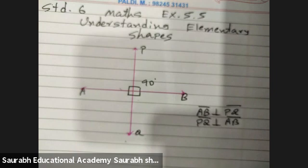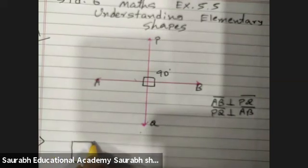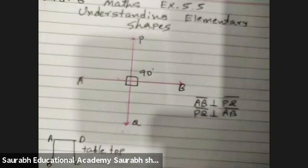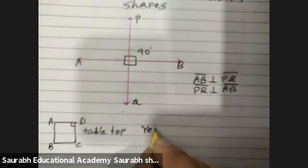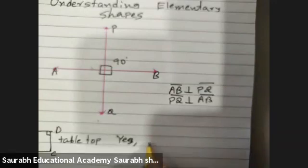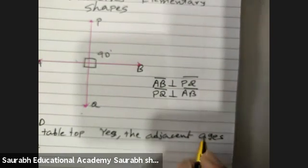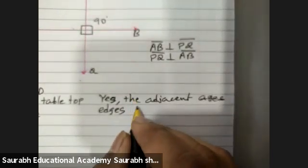You are given adjacent edges of a table top. Now see, here is your table top. So these edges are perpendicular to each other because they are at 90 degrees. Yes, we can write yes, the adjacent edges of a table top are perpendicular to each other.